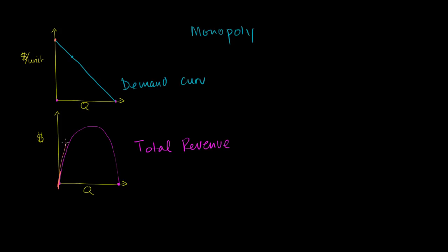The slope gets less and less steep, and then the slope actually becomes 0 at the peak of TR, and then starts going negative. So if I plot the marginal revenue — which is the slope of the tangent line — it starts off steeply positive, then gets less positive, hits 0 right around here, and then keeps going negative. We've already proven to ourselves that this marginal revenue curve has twice the slope of the demand curve. This is the marginal revenue curve.